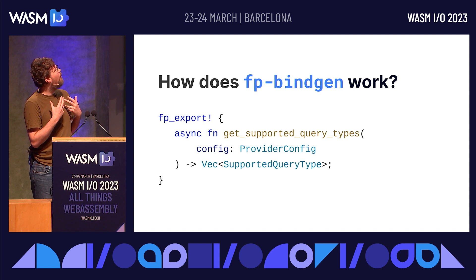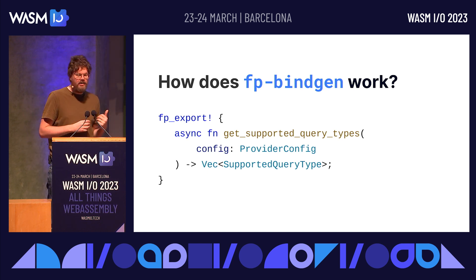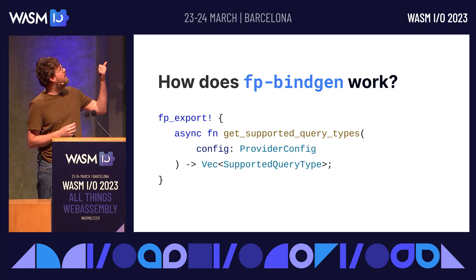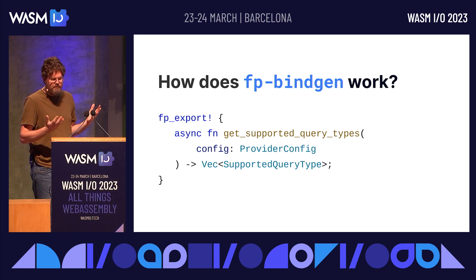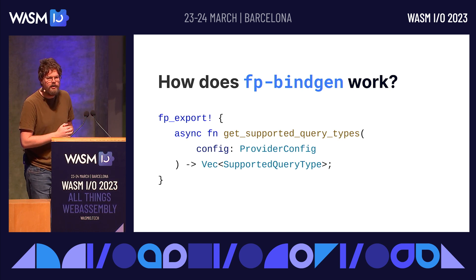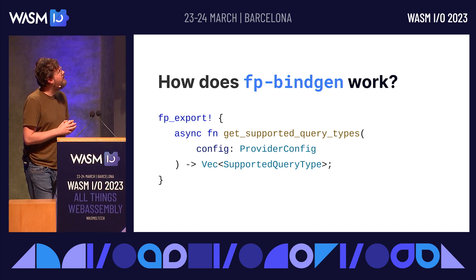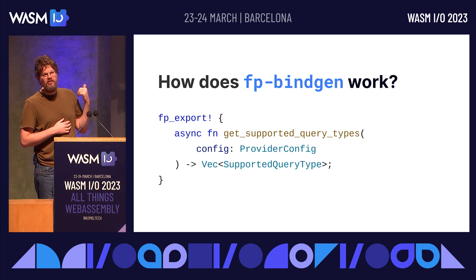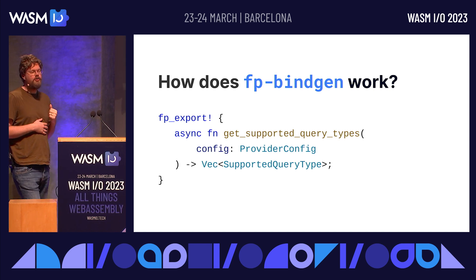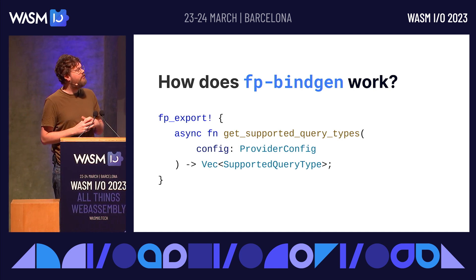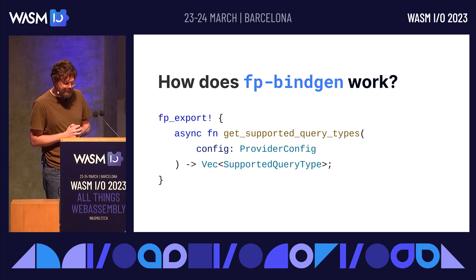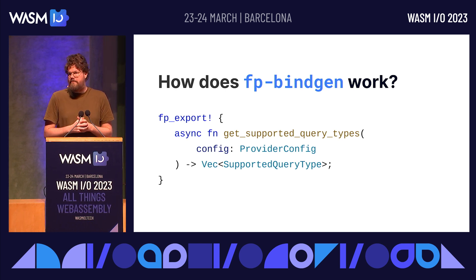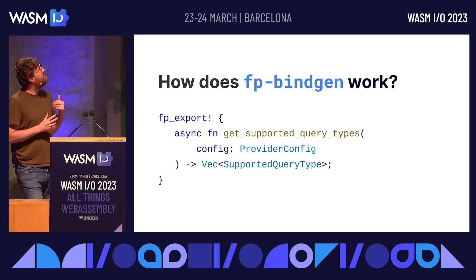This is one nice trick about using native Rust rather than an IDL — it allows you to refer to existing Rust types within your project. If you're building an application, you define your own data types. What you need to do is implement the FP bindgen serializable trait on your custom types, and that's all you need for those types to work within this protocol definition. FP bindgen will basically take care of the rest.